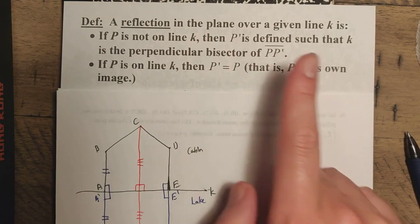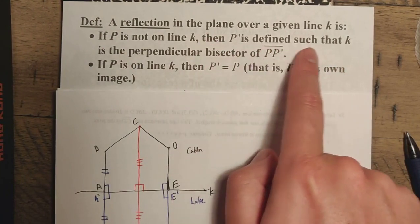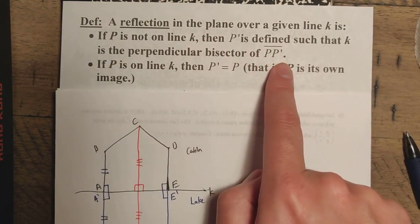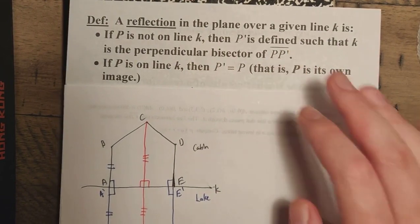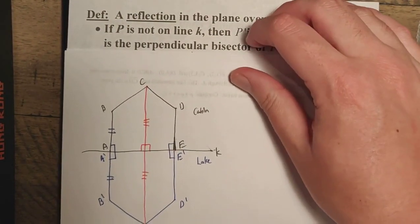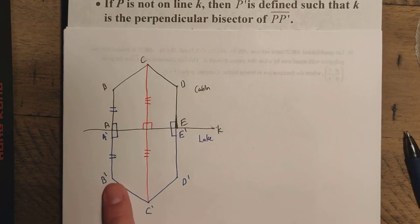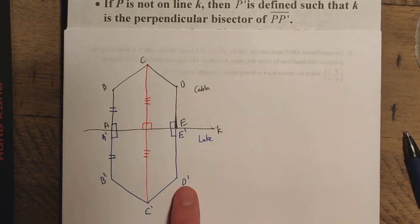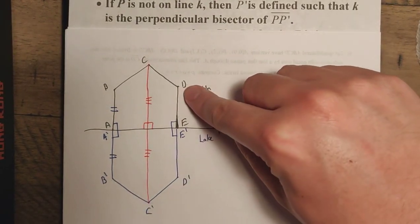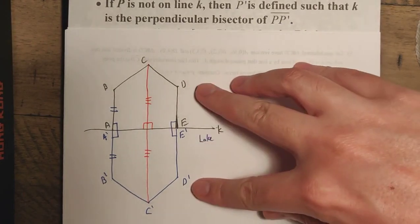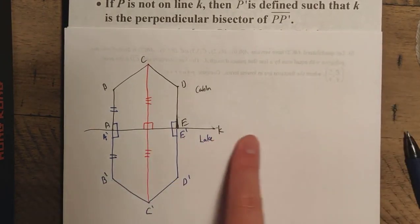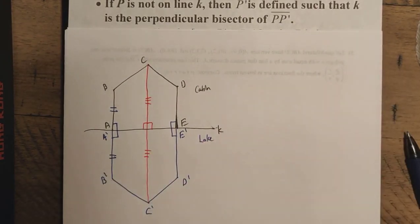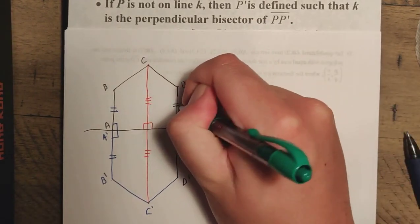However, P is not on line K, and this is the most important part. Then P prime is defined such that K is the perpendicular bisector of P, P prime. So basically the idea behind this is that we come up with a location of the image here such that if you were to connect the pre-image to the image here, if you were to connect these two, the line of reflection here acts as the perpendicular bisector of that segment here.